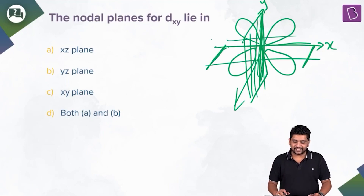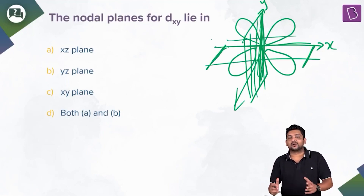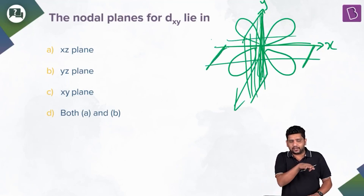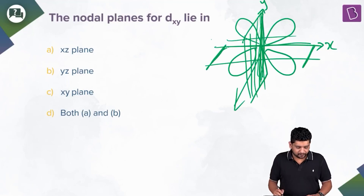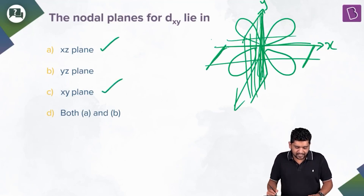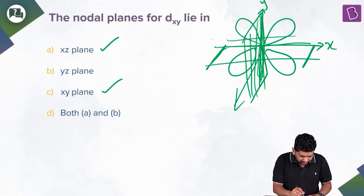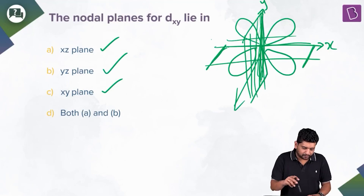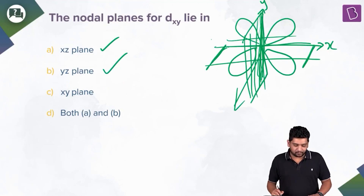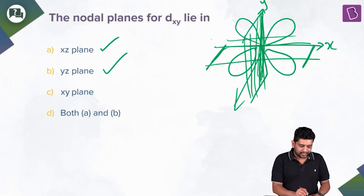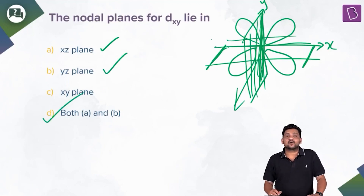You will have to visualize it — drawing doesn't help that much — but there is one XZ plane as well as a YZ plane. Looking at the options, both A and B are correct, and option D states exactly that both A and B are right. So my final answer is option D.